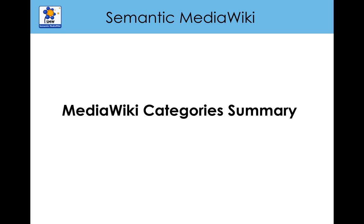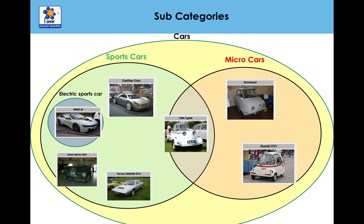Hello everyone. What we want to do is summarize what we've learnt in terms of MediaWiki categories. We talked about how we had various pages, we identified that a number of them fit in certain categories — they were micro cars and sports cars — and we easily added those categories for each page.